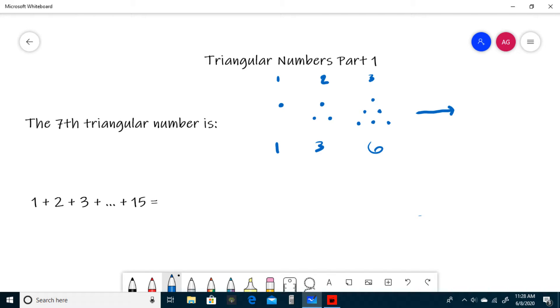Using this, let's think about what the seventh triangular number could be. So I'm going to draw a triangle at the base of seven dots.